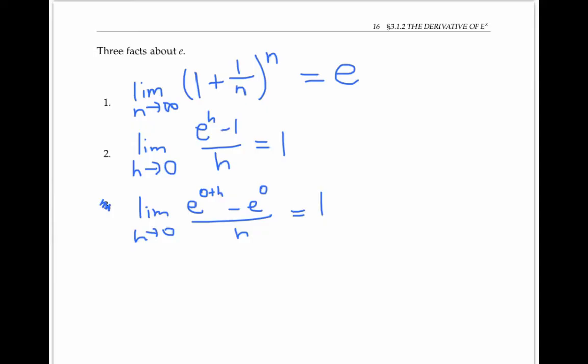And this expression right here on the left is just the derivative of e to the x at x equals 0 according to the limit definition of derivative. So this fact is really saying that the derivative of e to the x at x equals 0, that derivative is equal to 1.